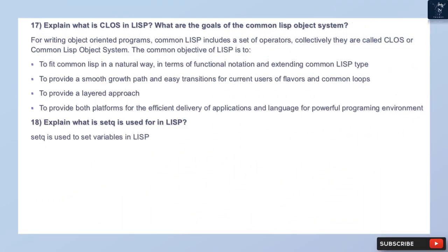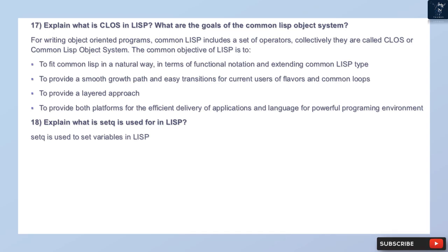Question 17: Explain what a class is in Lisp and what are the goals of the Common Lisp Object System (CLOS). For writing object-oriented programs, Common Lisp includes a set of operators collectively called CLOS — the Common Lisp Object System. Its goals are: to fit Common Lisp in a natural way in terms of functional notation and extend Common Lisp types; to provide a smooth growth path and easy transitions for current users of Flavors and CommonLoops; to provide a layered approach; and to provide platforms for both efficient application delivery and powerful programming environments.